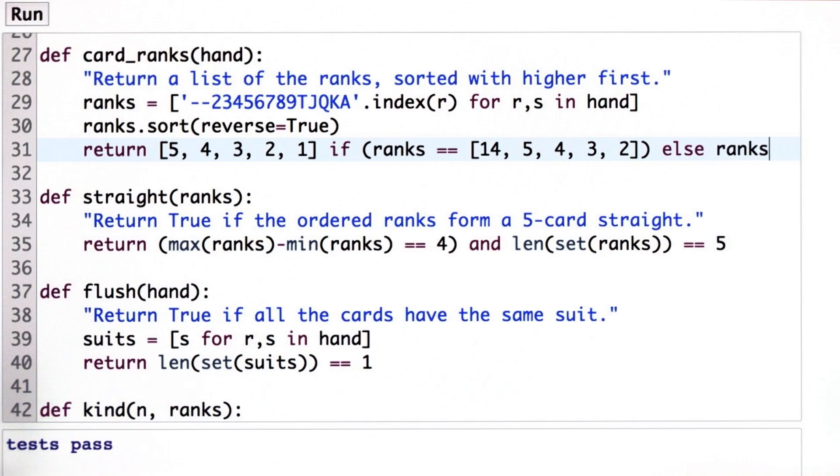And my claim is that this will make everything work because now we've taken this one hand that was problematic and we corrected it by making an ace be a 1 instead of a 14. And now, all the other comparisons of ranks will work out properly. This will, in fact, be a straight because 5 minus 1 is 4 and there's 5 different cards. And the high value in here will, in fact, be a 5 and not the ace.